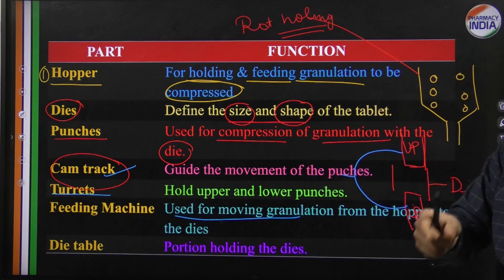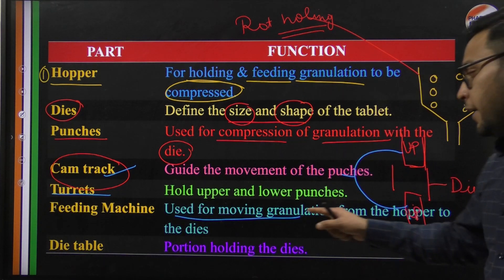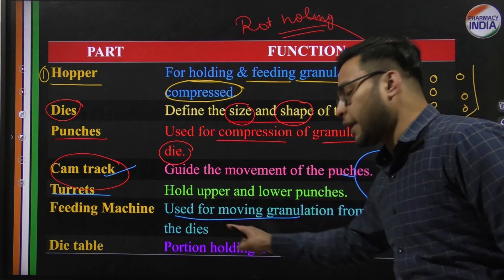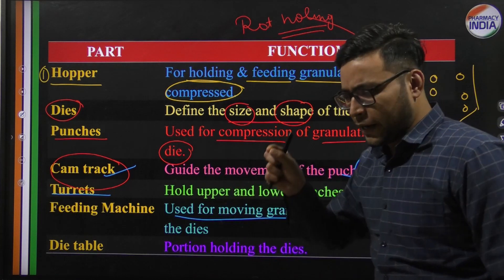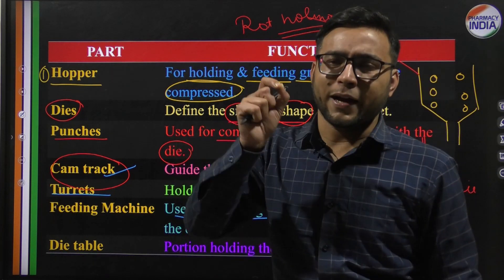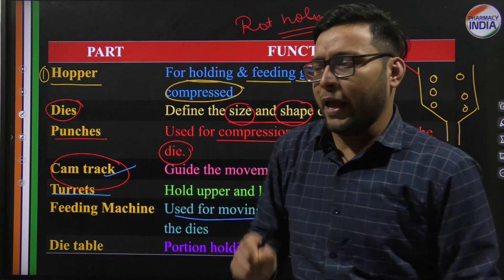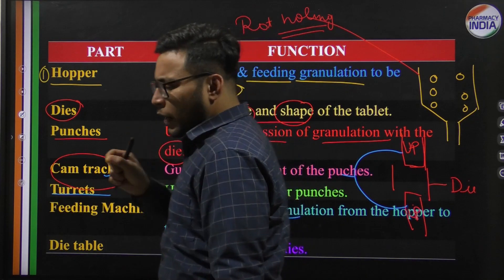The granules are compressed in the die and the tablet is formed. Next is the die table, which holds the dies.